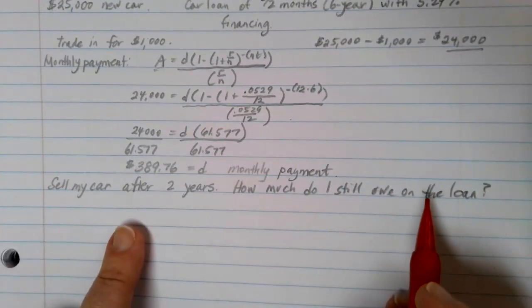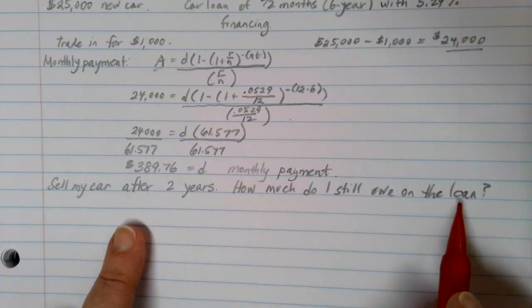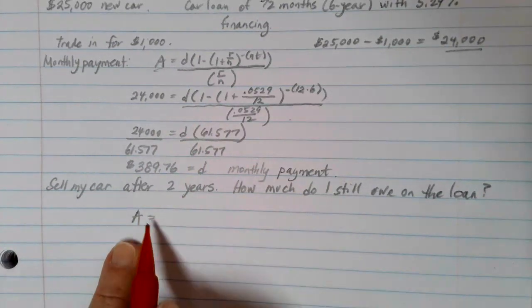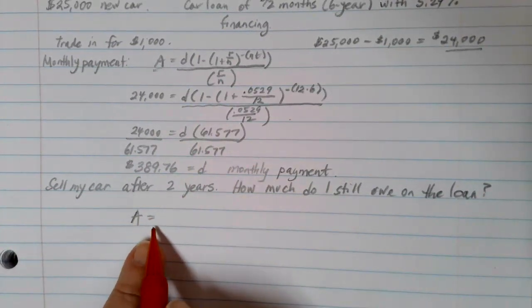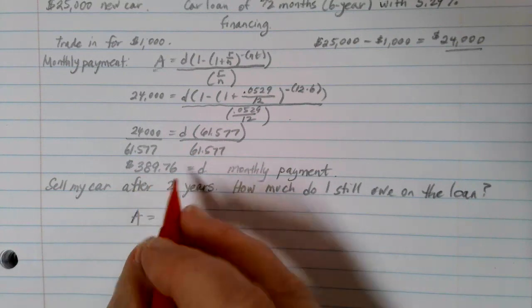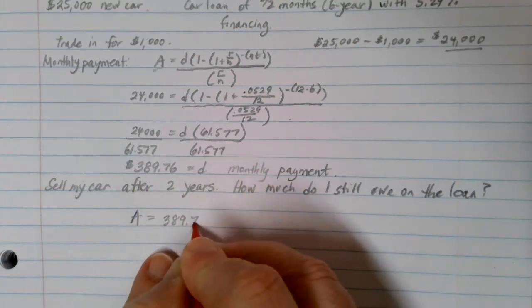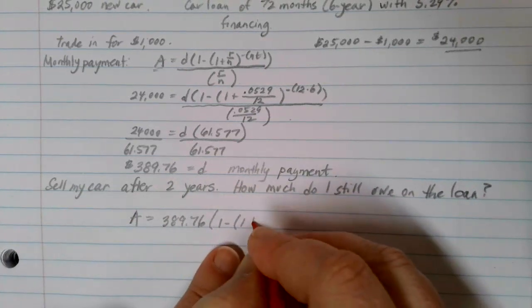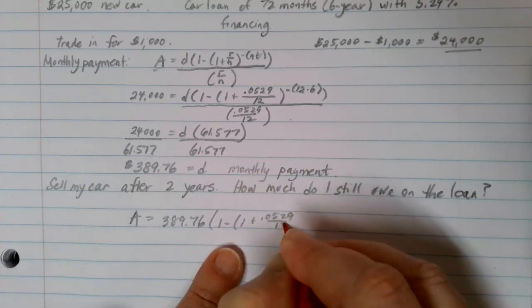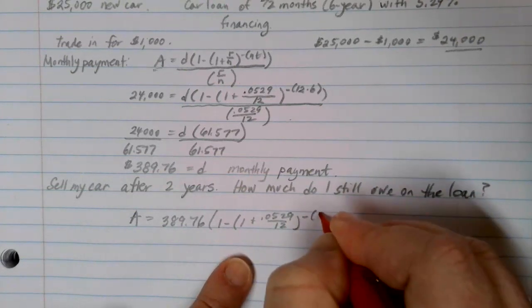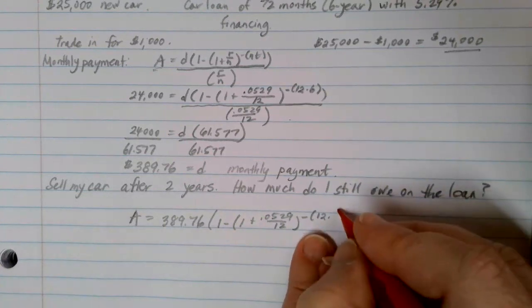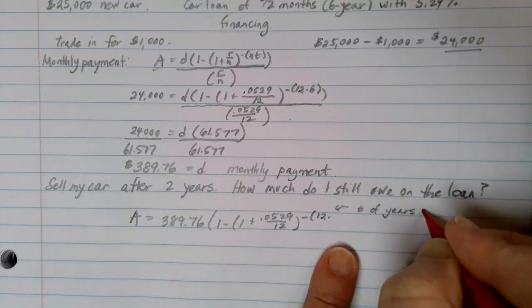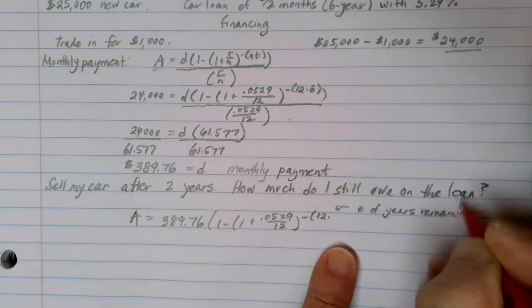If we want to figure out how much is remaining on a loan, we're going to be using our loan formula. We're going to be looking for A this time. We're going to use the monthly payment amount that we've been making, so that's going to be $389.76. All of our loan information is the same: 1 minus 1 plus 0.0529 over 12 to the negative 12. But this time, when we go to put the number of years, this is the number of years remaining on the loan.